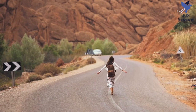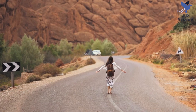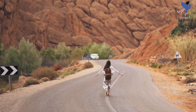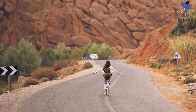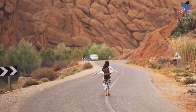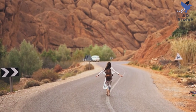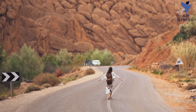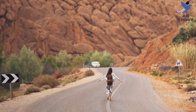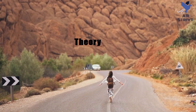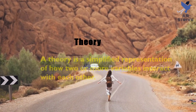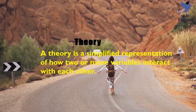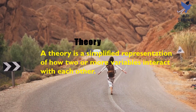Economists see the world through a different lens than anthropologists, biologists, classicists, or practitioners of any other discipline. They analyze issues and problems with economic theories that are based on particular assumptions about human behaviour — different from the assumptions an anthropologist or psychologist might use. A theory is a simplified representation of how two or more variables interact with each other.